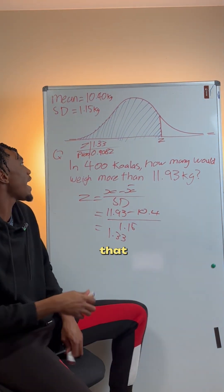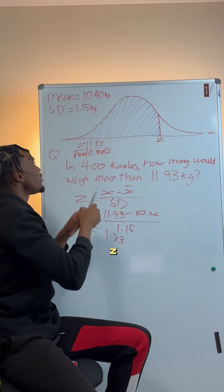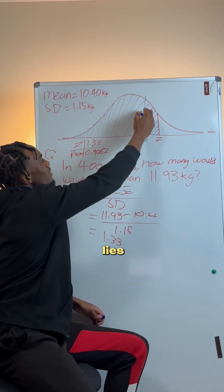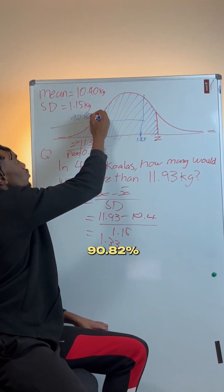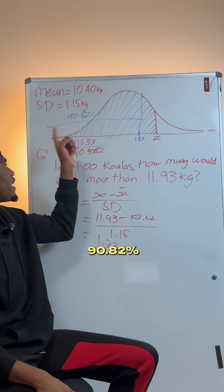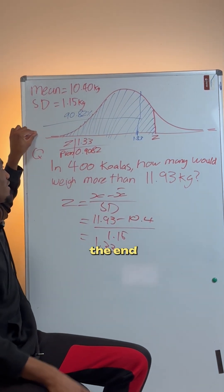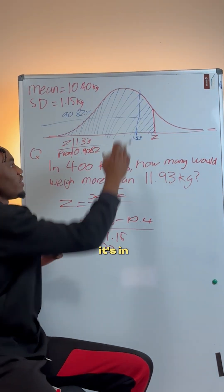Right, and this correlation means that from this point here to z-score of 1.33 lies 90.82% of scores. So 90.82% of scores lie between the end and this point here, because it's in this range.